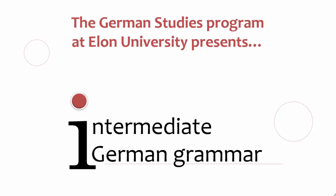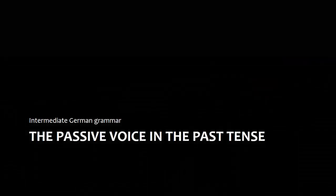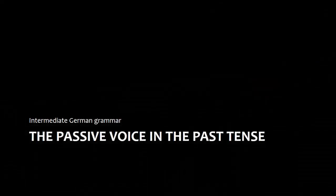Welcome to Intermediate German Grammar, presented by the German Studies Program at Elon University. This presentation explains how the passive works and why and when to use it. We'll focus mainly on the use of passive in the past tense, although present tense usage will also be mentioned. This video complements the video on helping verb selection in the past tense — you'll want to watch that video either before or after watching this one.